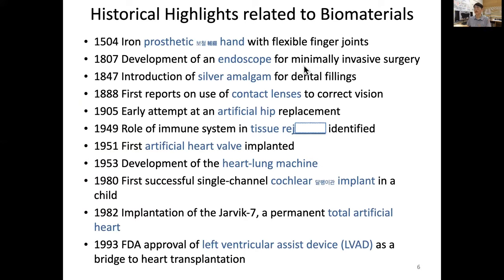About more than 75 years ago, there was introduction of silver amalgam for dental fillings. In 1888, the first report of contact lenses to correct vision. And in 1905, an early attempt at artificial hip replacement for those with problems in the hip joints.